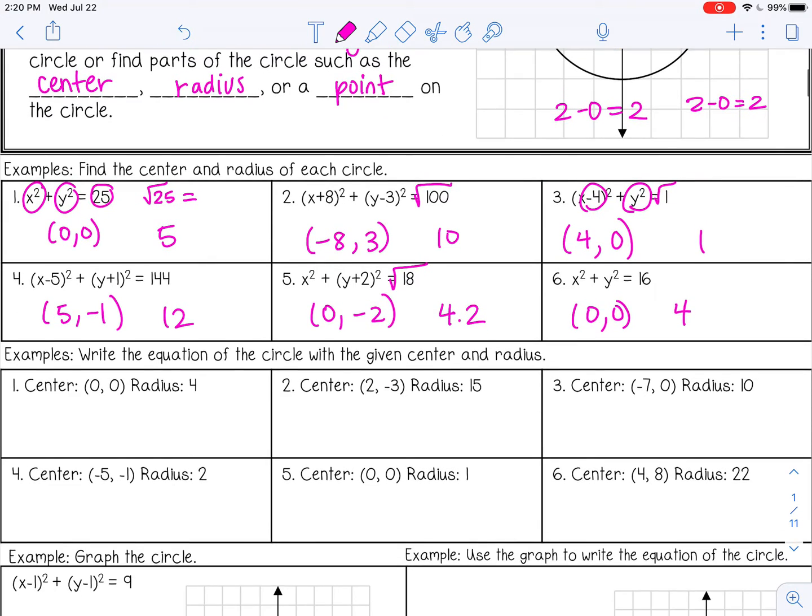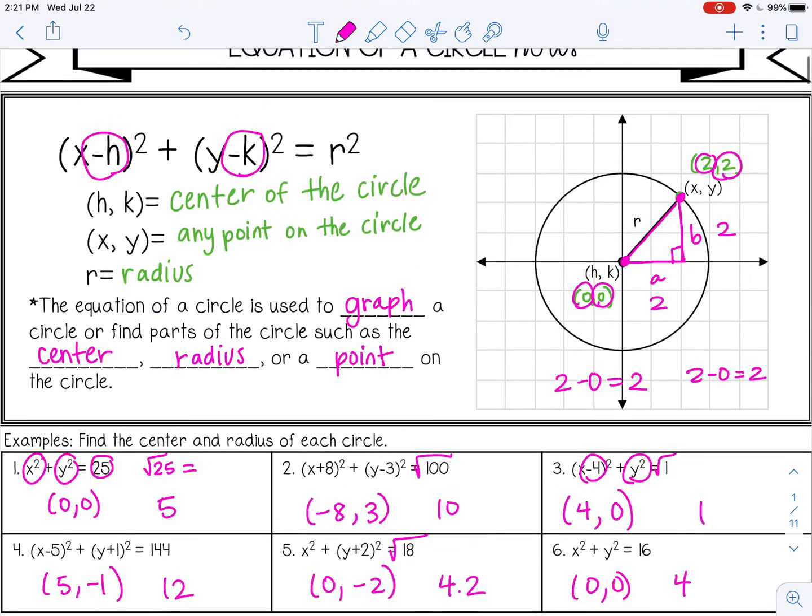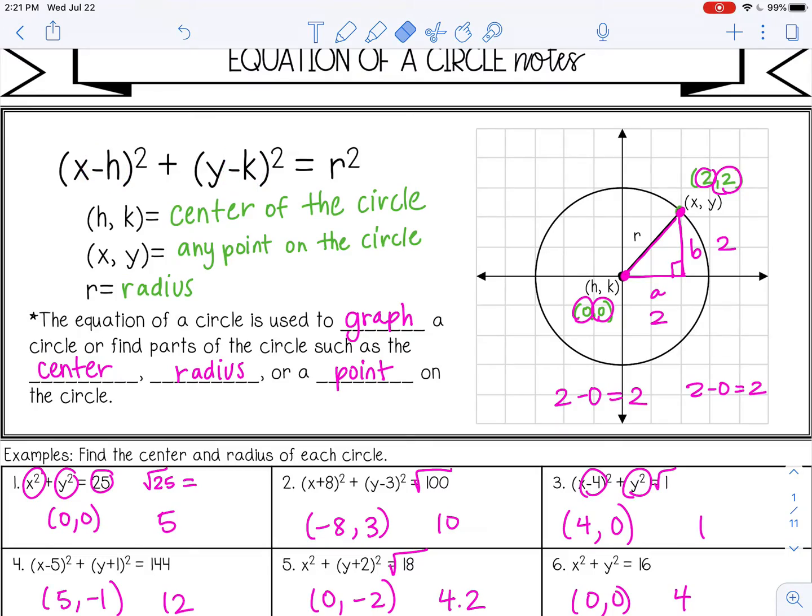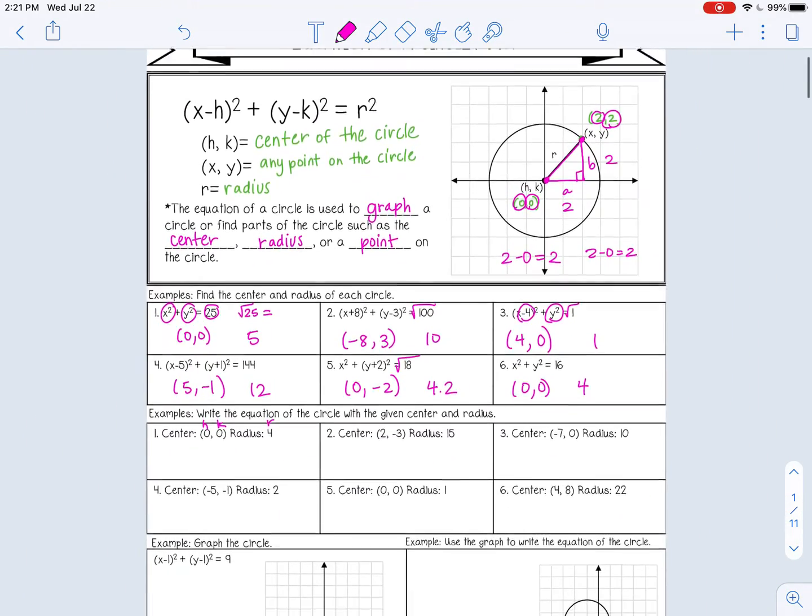All right, in the next set of examples, we are going to write the equation of a circle with a given center and radius. So remember, the center is my h and my k. My radius is, of course, r. So I'm going to substitute those into my formula up here. Let's make it bigger so we can see it all at one time.